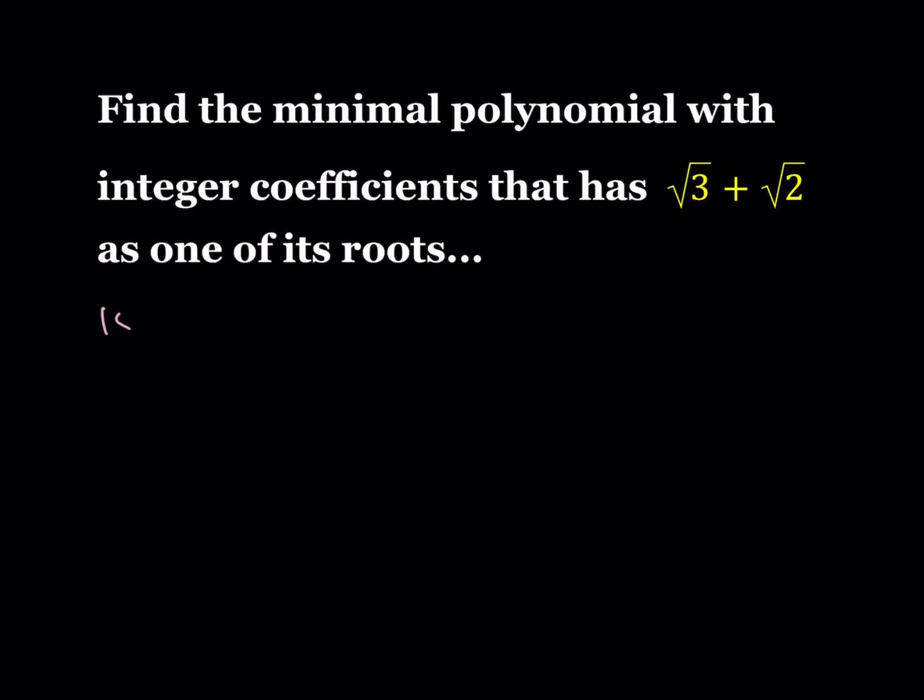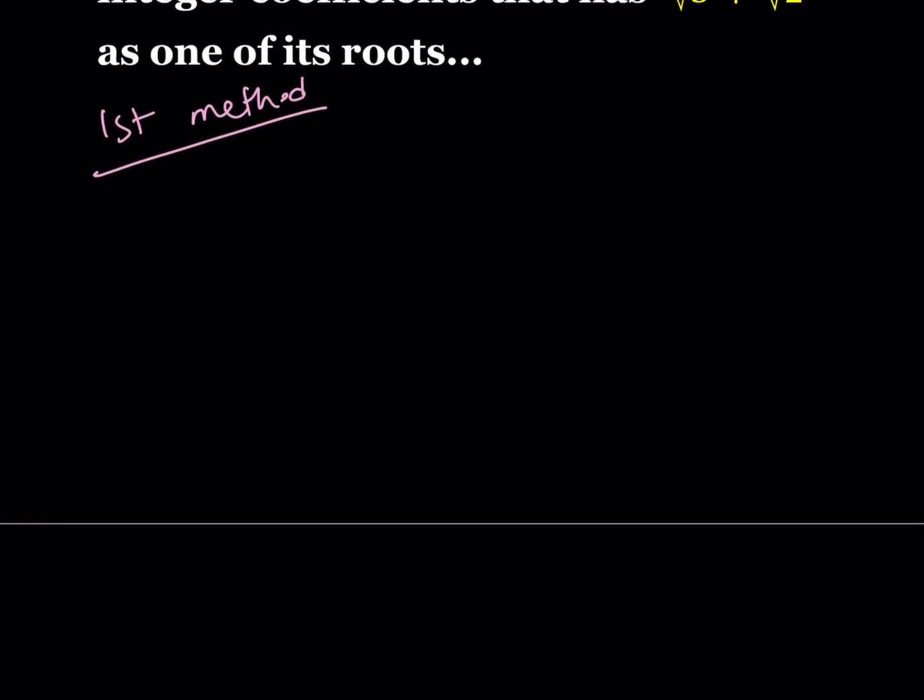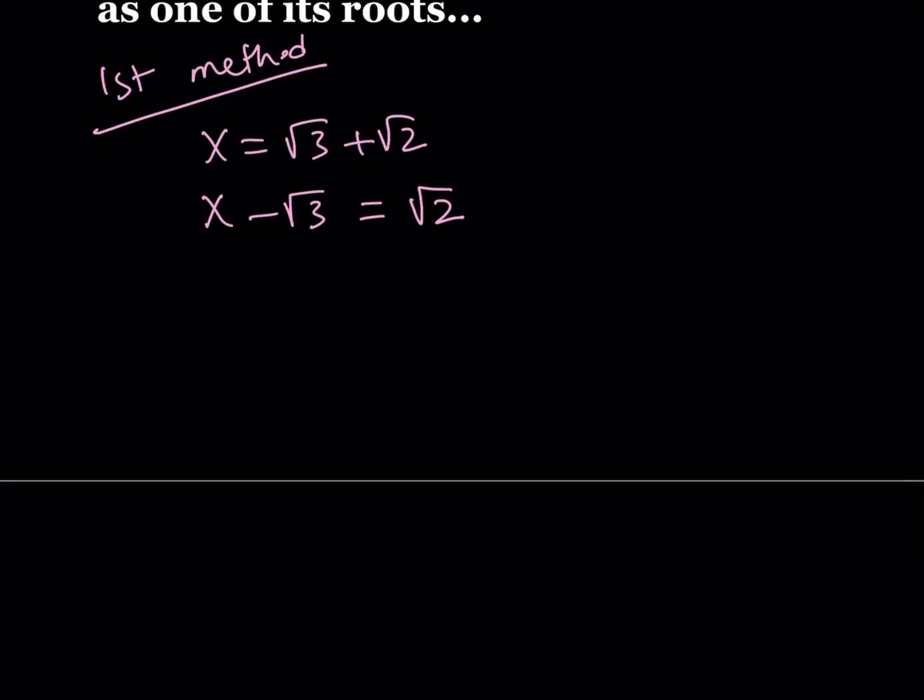First method. Did I say I'm going to present two methods? Maybe I didn't. Now I did. First method. Since one of the roots is root 3 plus root 2, we can just write x equals this. Let's go ahead and subtract root 3. My goal is to leave one of the radicals on one side, and I could do it to root 3 or root 2. It doesn't really matter. And I don't consider those two separate solutions, by the way.